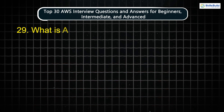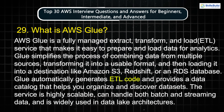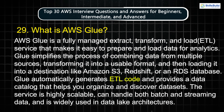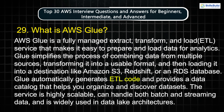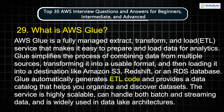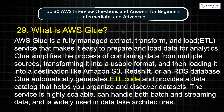Question 29: What is AWS Glue? AWS Glue is a fully managed extract, transform, and load service that makes it easy to prepare and load data for analytics. Glue simplifies the process of combining data from multiple sources, transforming it into a usable format, and then loading it into a destination like Amazon S3, Redshift, or an RDS database. Glue automatically generates ETL code and provides a data catalog that helps you organize and discover datasets. The service is highly scalable, can handle both batch and streaming data, and is widely used in data lake architectures.